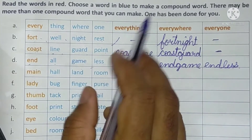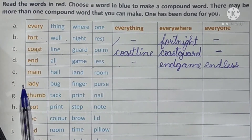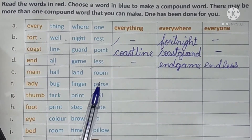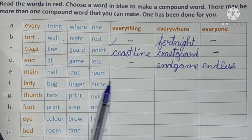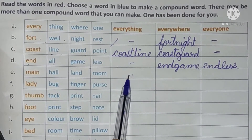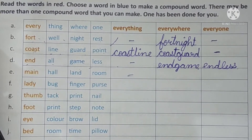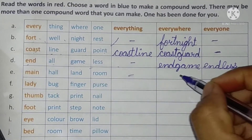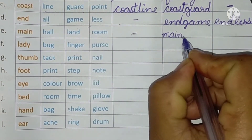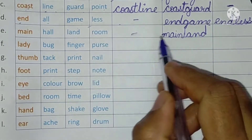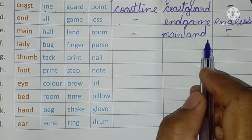Next is 'main': main ball, mainland, and main room. Main ball — no, leave blank. Mainland — yes, we write M-A-I-N-L-A-N-D. Main room — no, leave blank.